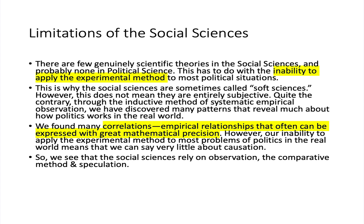The social sciences rely on observation and the comparative method. They can compare cultures at the same time, cultures over time, or a single culture over a period — for example, American culture today versus American culture in the early 18th century. We can apply sophisticated statistical methods to try to control for intervening variables and clarify empirical relationships, but we can almost never proceed to confident assertions of causation.